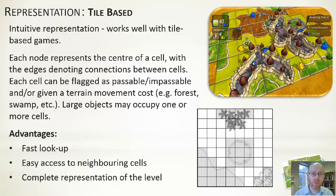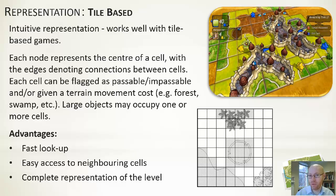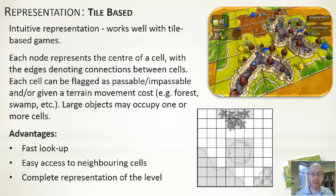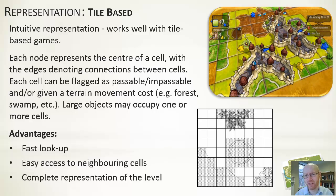Grids have a disadvantage of being a brute-force lookup, but they're fast and provide a complete representation — every bit of the level has a corresponding cell. You can compare this with the navigation mesh, which we'll look at next. Grids are what we're going to assume for most of the algorithms discussed.